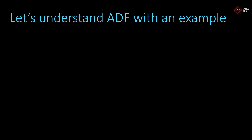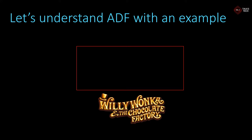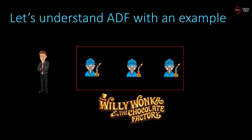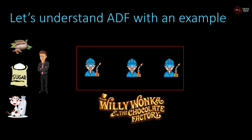In this example, let's consider a chocolate factory — the famous Willy Wonka chocolate factory. In this factory there is a manager who takes care of the factory, and there are three workers who actually make the chocolate. The manager has connections to multiple dealers who provide raw materials: the dealer providing cocoa seeds, the dealer providing sugar, and the dealer providing milk. The manager has a good relationship with all these providers and collects all the raw materials to send to the factory.